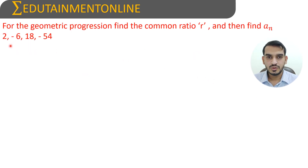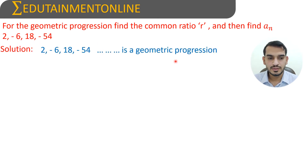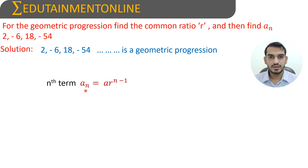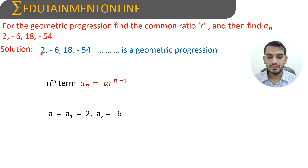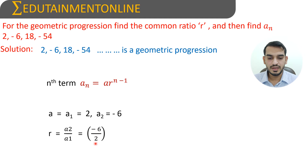This is also a geometric series: 2, -6, 18, -54, and so on. We need to find An and R using the same nth term formula. A equals 2, and R equals A2 by A1, which is -6 divided by 2, giving R equals -3.